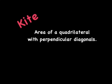So in this video, we attempted to talk about the area of a quadrilateral with perpendicular diagonals. One example of that is a kite.